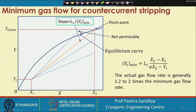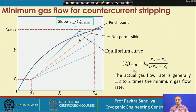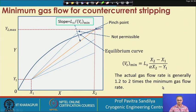We cannot cross the equilibrium curve in either stripping or absorption, because crossing would mean reverse mass transfer — it would no longer be stripping but absorption. So we have to stop at the equilibrium curve. The minimum vapor flow rate is found from this equation: y2_max equals alpha times x2. Similarly, the actual gas flow rate should be taken as 1.2 to 2 times the minimum gas flow rate.